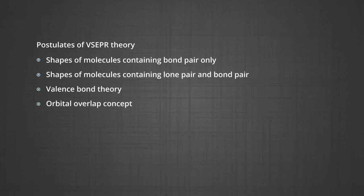In the previous module, I also covered shapes of molecules containing bond pairs only, shapes of molecules containing lone pairs and bond pairs, valence bond theory, orbital overlap concept, and directional properties of bonds. Today we will study about overlapping of atomic orbitals and hybridization. The valence bond theory explains the shape, formation, and directional properties of bonds in polyatomic molecules like methane, ammonia, and water in terms of overlap and hybridization of atomic orbitals.